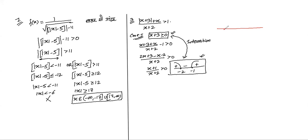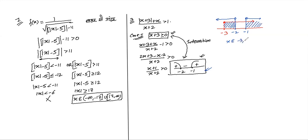Plotting on a number line: x+3 ≥ 0 means x ≥ -3. The wavy curve gives x < -2 or x > -1. Taking intersection: common region is [-3, -2) from the first condition combined with (−1, ∞). So Case 1 gives x ∈ [-3, -2) ∪ (-1, ∞).